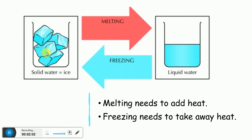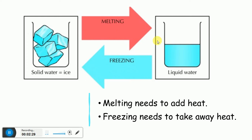And melting — when you put the ice outside the freezer, which has more temperature, or you add more heat to the ice — it's going to turn into liquid water. This process is called melting. So melting needs to add heat and freezing needs to take away heat; they are opposite to each other. Melting is from solid to liquid, and freezing is from liquid to solid.